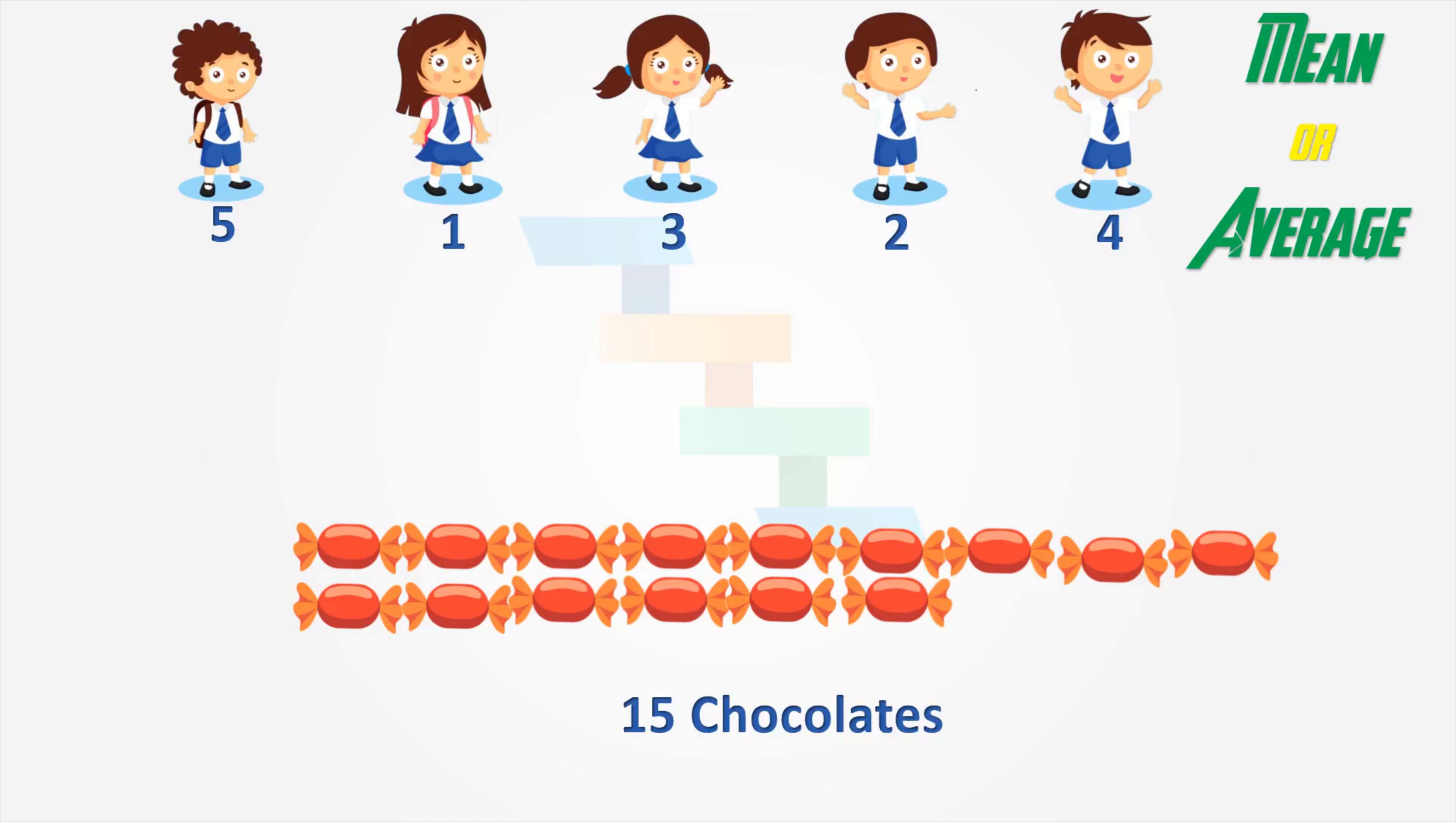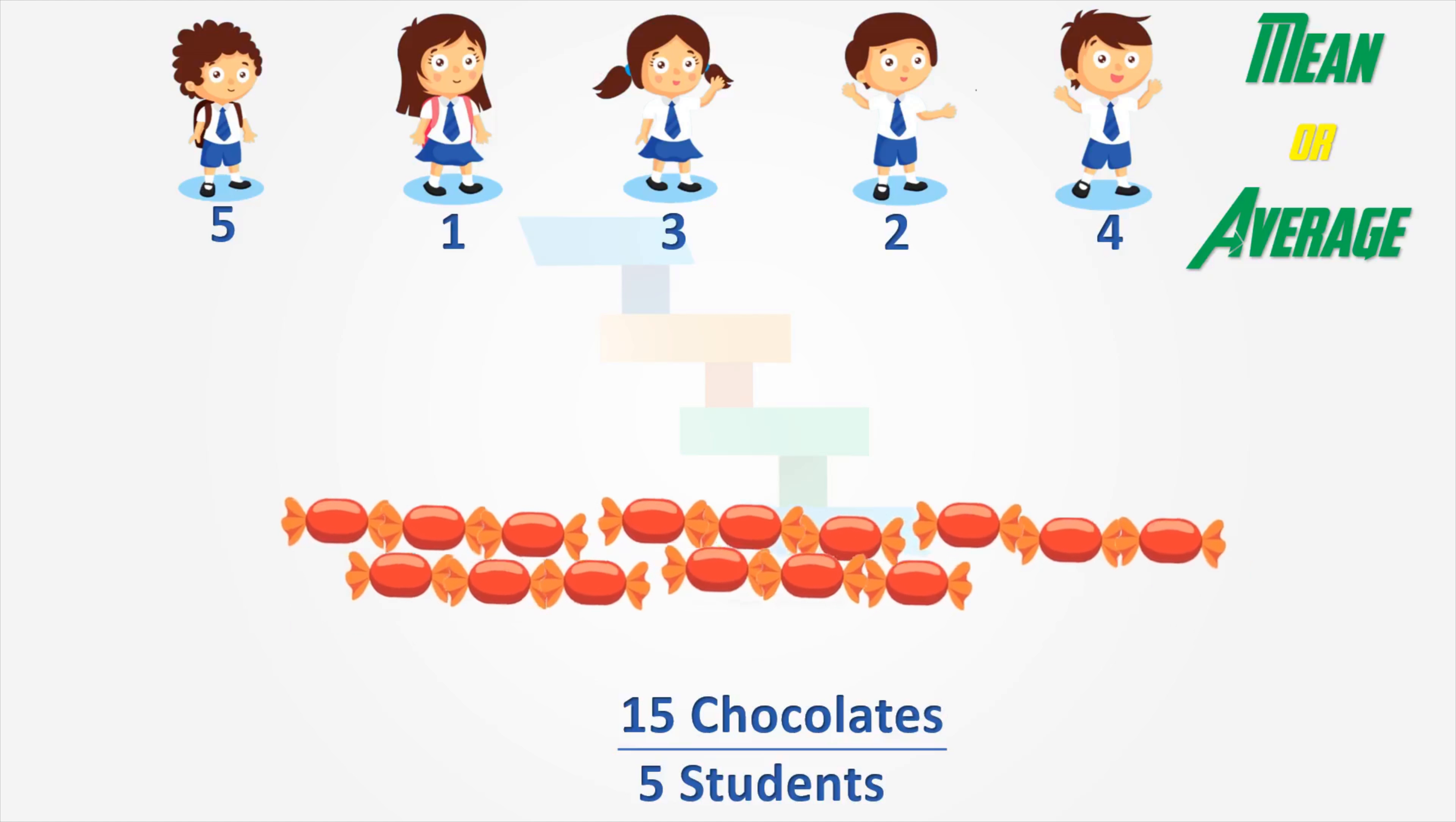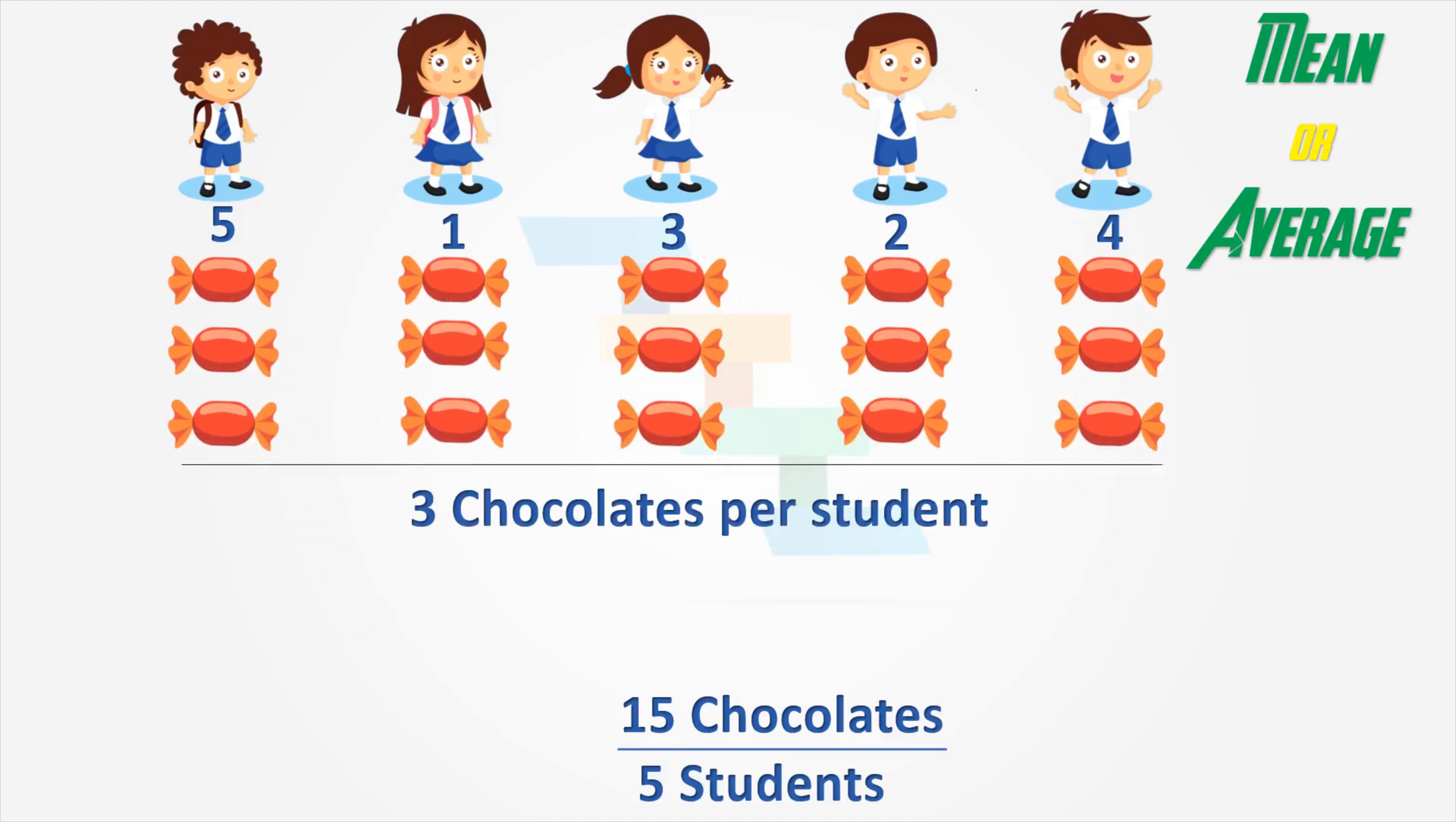Now, teacher wants to divide it among 5 students equally. So, 15 divided by 5 gives us 3. So, each student gets 3 chocolates. This is mean which is nothing but the average. To find the mean, add all the data points in the data set and divide it by number of data points which will give us the mean or average.